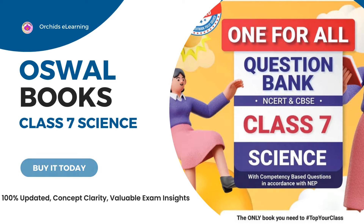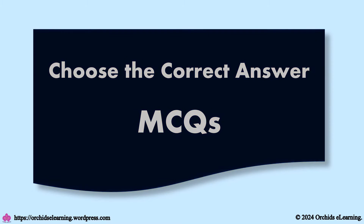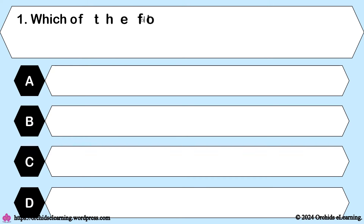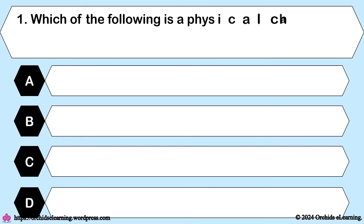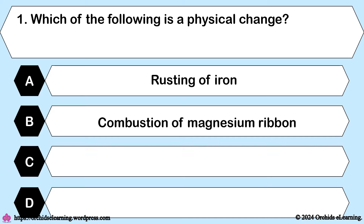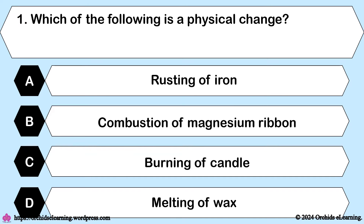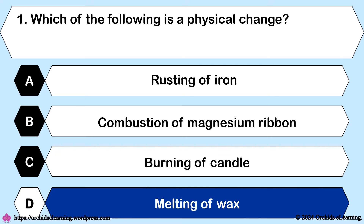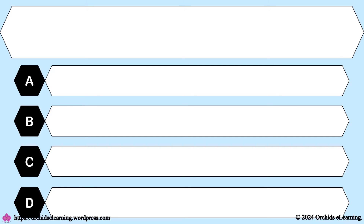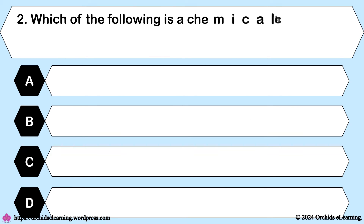Choose the correct answer. Which of the following is a physical change? Answer: D — Melting of wax. Which of the following is a chemical change?